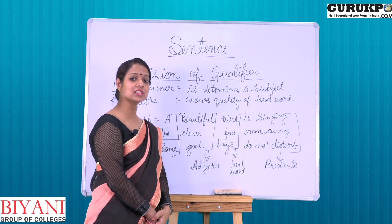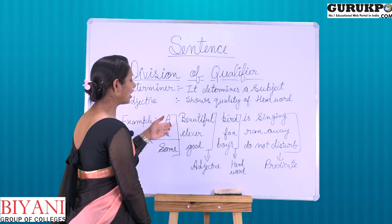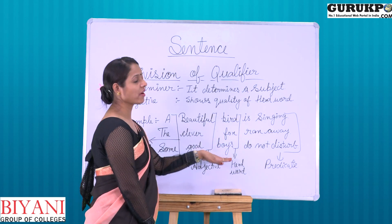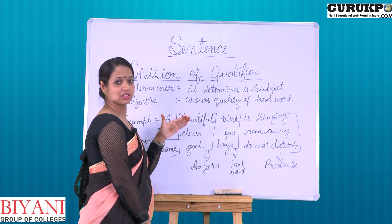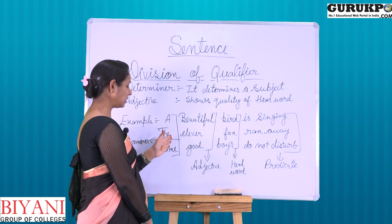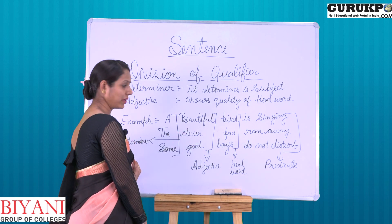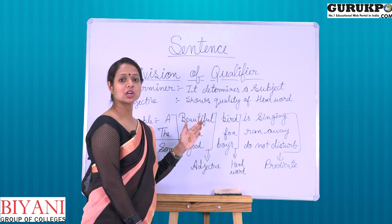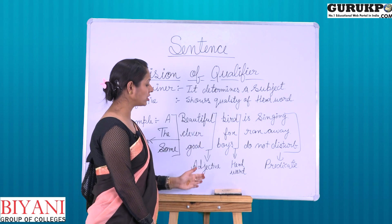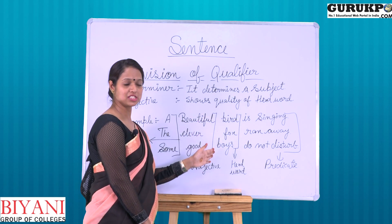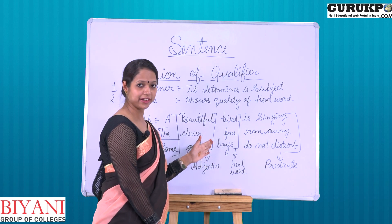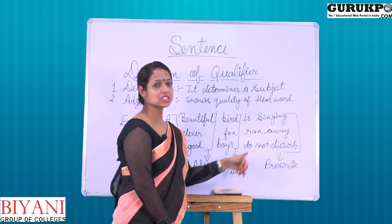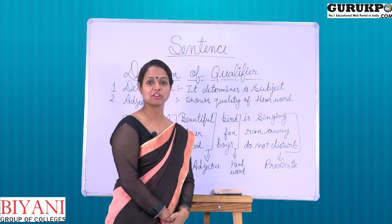We will understand these by some examples. 'A beautiful bird is singing.' 'The clever fox ran away.' 'Some good boys do not disturb.' In these sentences, 'a,' 'the,' and 'some' are denoting determiners. 'Beautiful,' 'clever,' and 'good' are the adjectives which show the qualities or additional information about the subject. 'Bird,' 'fox,' and 'boys' are working as head words. 'Is singing,' 'ran away,' and 'do not disturb' are all predicates, which are the essential parts of a sentence.